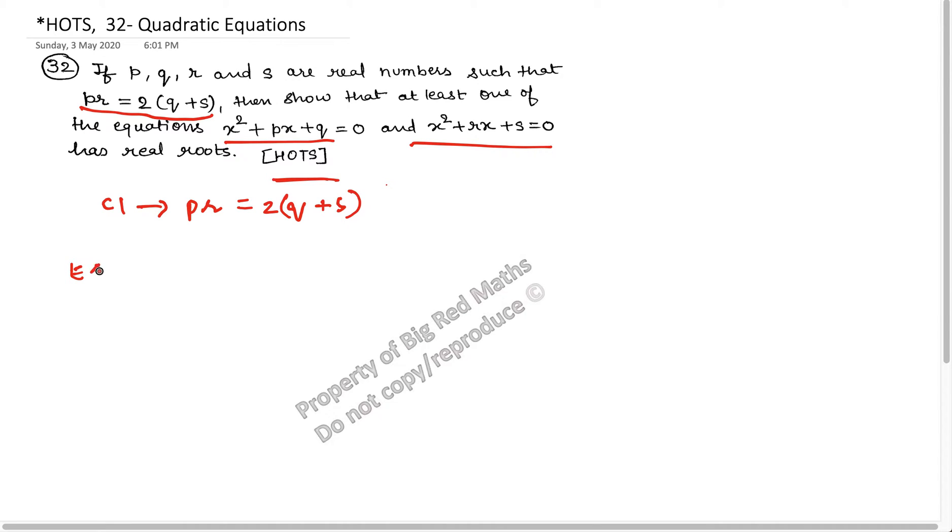And what is the equation one given? Equation one is x² + px + q = 0. This is the equation one.